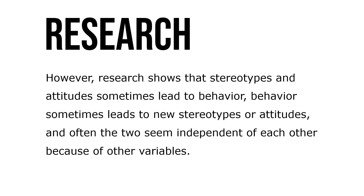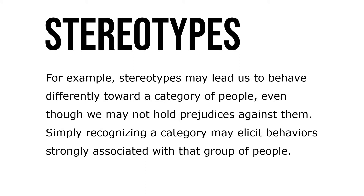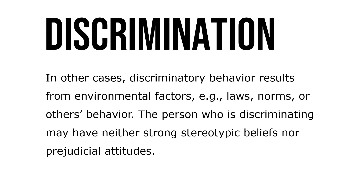However, research shows that stereotypes and attitudes sometimes lead to behavior, behavior sometimes leads to new stereotypes or attitudes, and often the two seem independent of each other because of other variables. For example, stereotypes might lead us to behave differently towards a category of people even though we may not hold prejudices against them. In other cases, discriminatory behavior results from environmental factors like laws, norms, or others' behavior — the person discriminating may have neither strong stereotypic beliefs nor prejudicial attitudes.